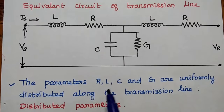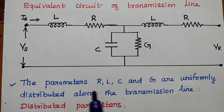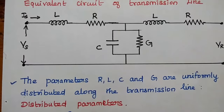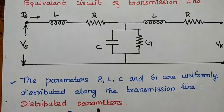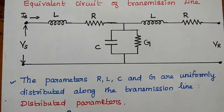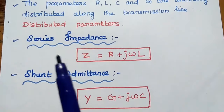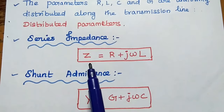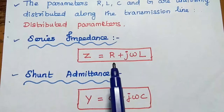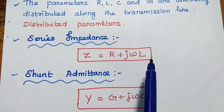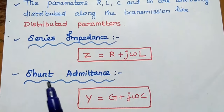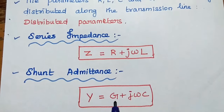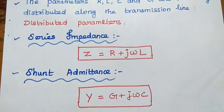The parameters R, L, C, and G are uniformly distributed along the transmission line. Hence, these parameters are also known as distributed parameters. The series impedance of the transmission line is denoted as Z, which is equal to R plus j-omega-L. The shunt admittance is denoted as Y, which is equal to G plus j-omega-C.